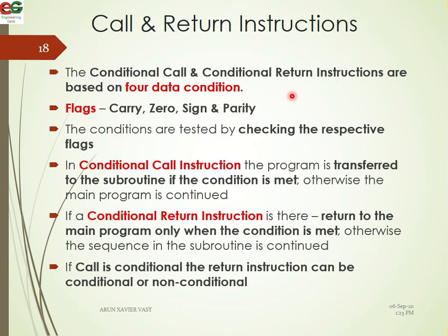There are four flags: carry flag, zero flag, sign flag, and parity flag. We check the condition — for example, we check the zero flag. Call if non-zero (CNZ), call if zero (CZ).